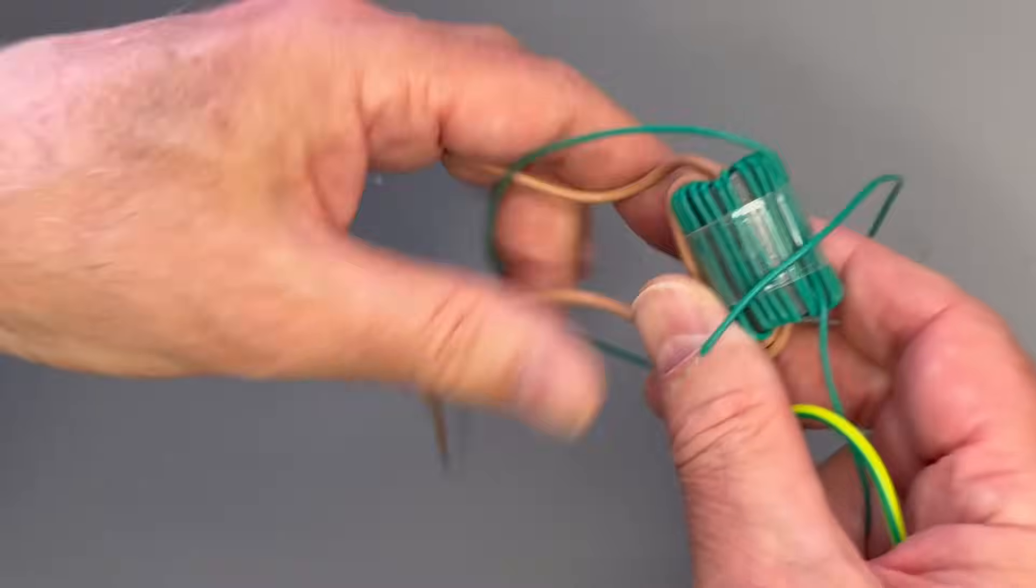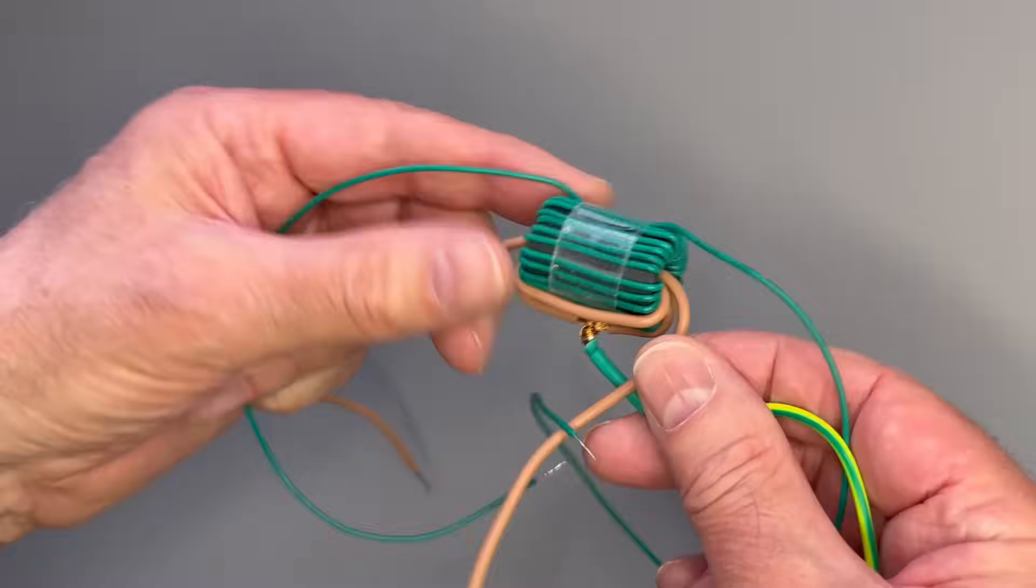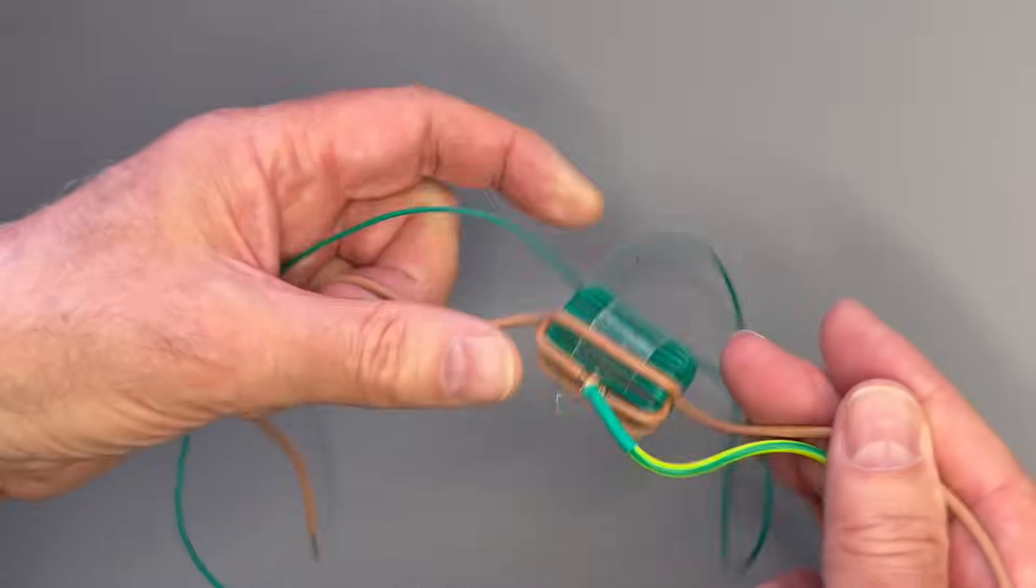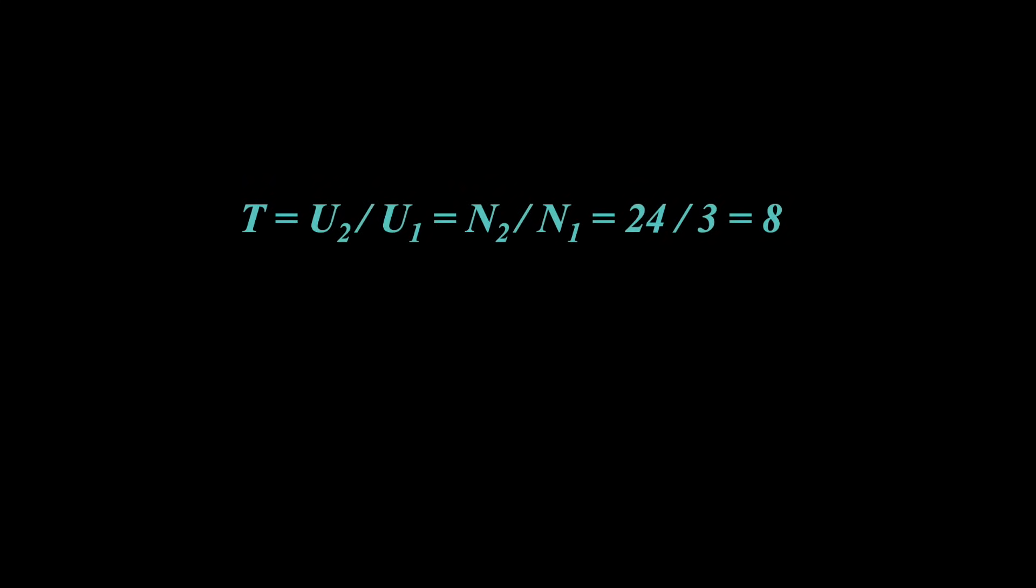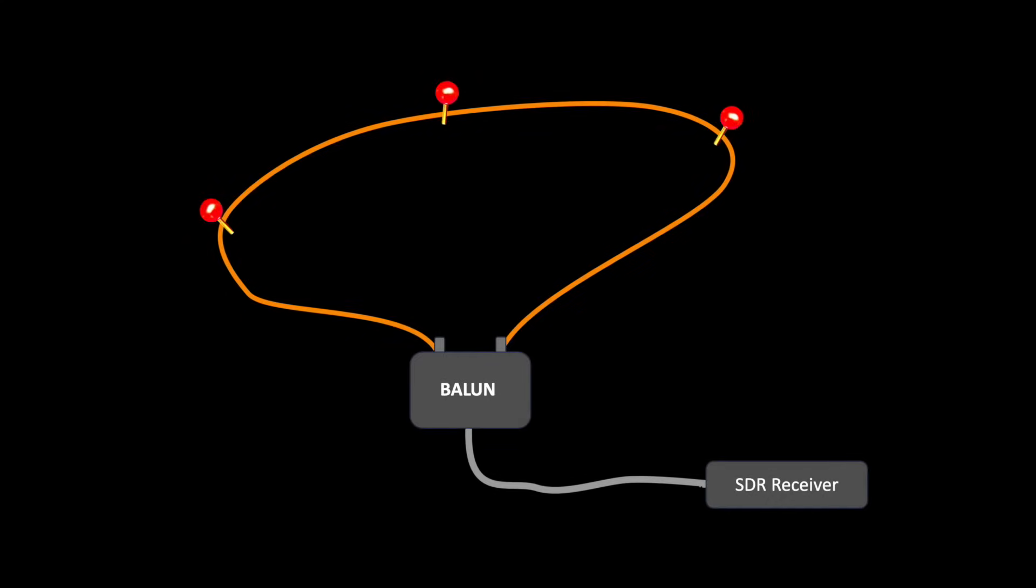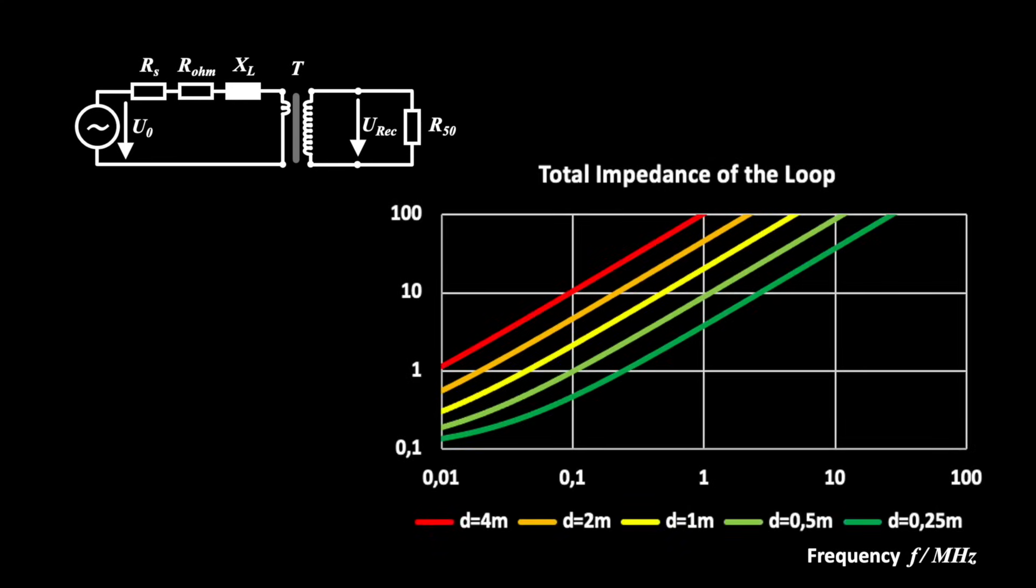24 turns of 0.5 mm insulated wire fit on the ferrite core, resulting in a ratio of 8 or 64 respectively. The size of the loop, the transformation ratio and the frequency range are related as follows.